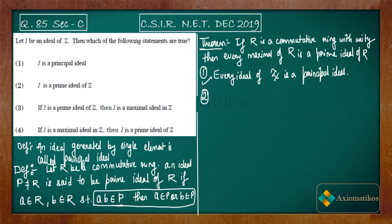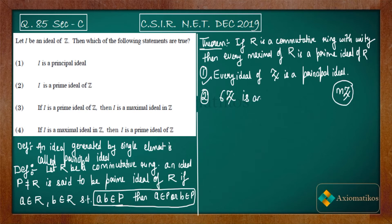Now let us see the second option: it says I is a prime ideal of Z. If I is an ideal of Z, then it is a prime ideal of Z. I will take the ideal 6Z. We know this is an ideal. In general, mZ where m belongs to some natural number is always an ideal of Z, where m belongs to the natural numbers union zero.